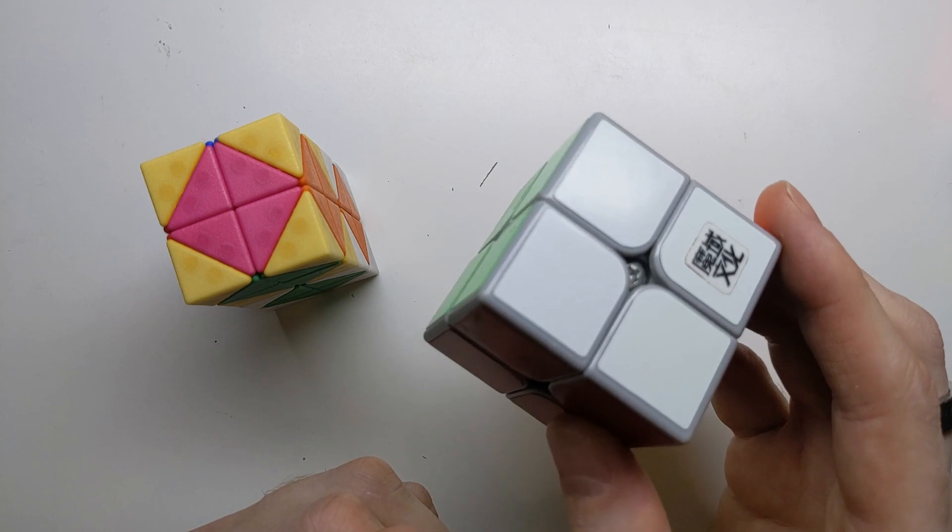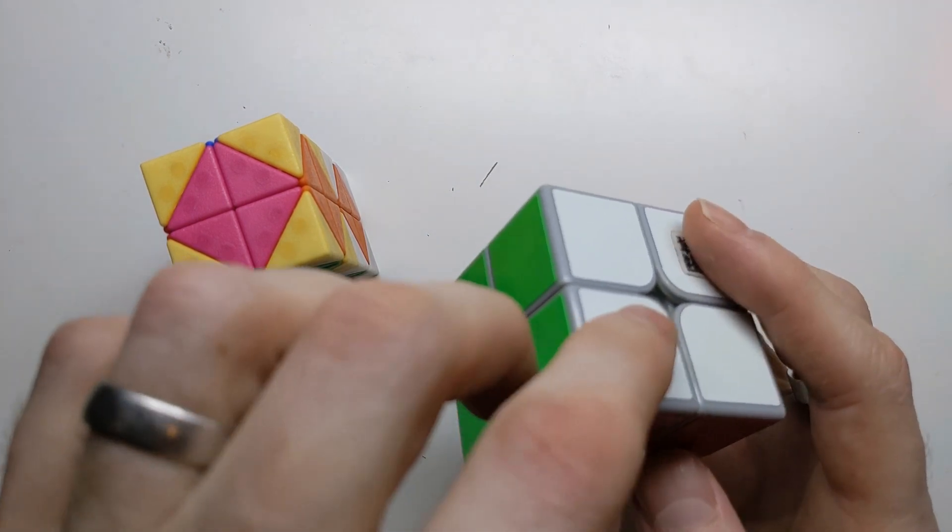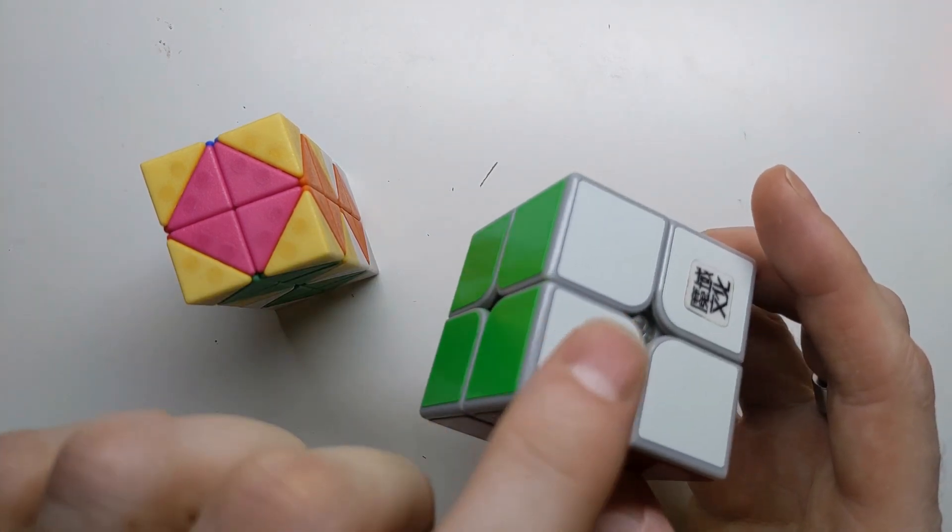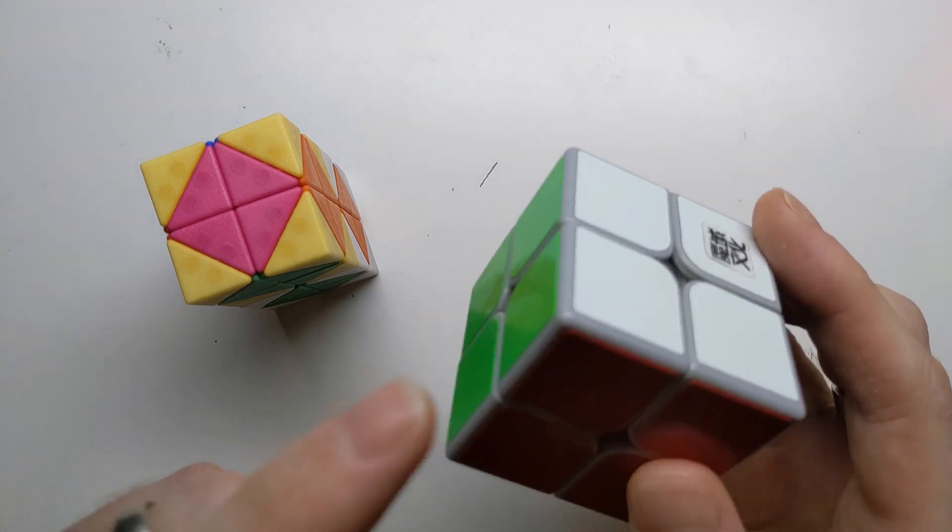So on a regular 2x2x2, we take three of these square faces and combine them together to make a corner piece like this one, which is white, red, green, for example.